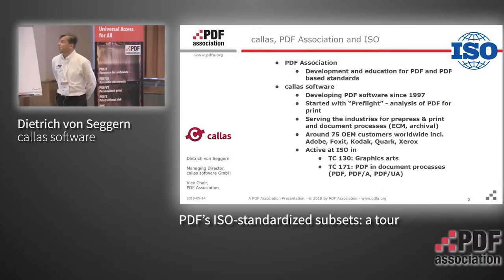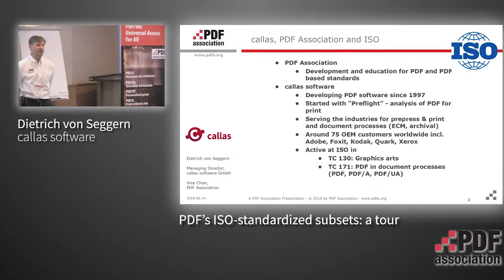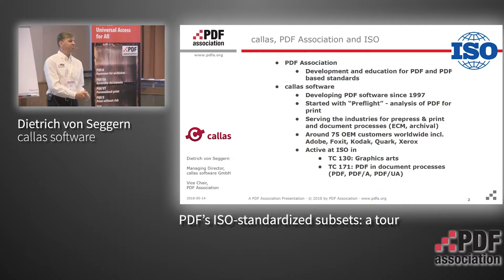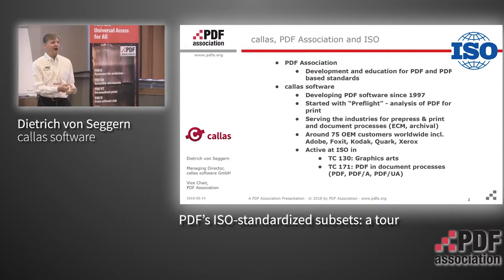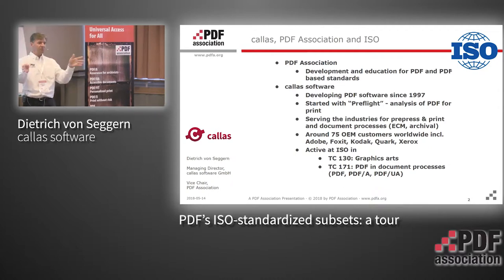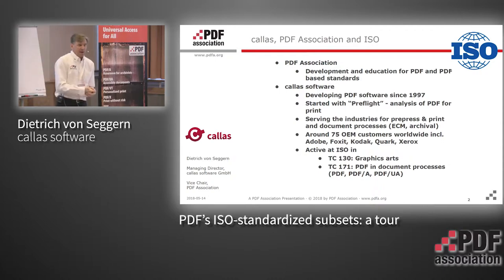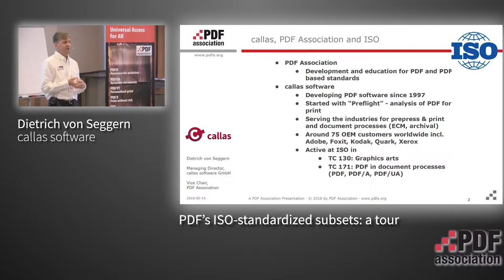Just a few words about the companies involved. The PDF Association wants to market PDF and PDF-based ISO standards for the industry, and also bring feedback from the market back into ISO. The PDF Association works in two ways: doing marketing about PDF and PDF-based ISO standards, and also getting information from the market and bringing that into ISO. Kala software, the company I work for, has been doing PDF software here in Berlin for 21 years.